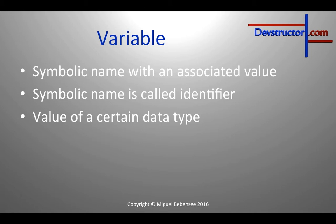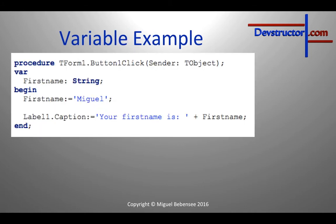Let me give you a short example. In this example I want to display my name on a label, and I am saving my first name in a variable called 'first name'. So the identifier is 'first name' and the data type is string — so in text.